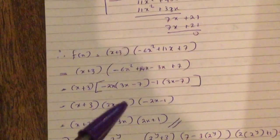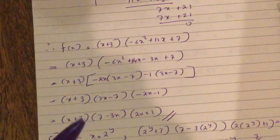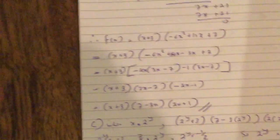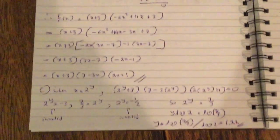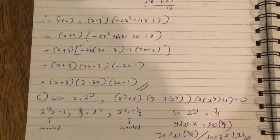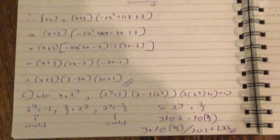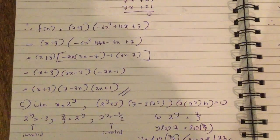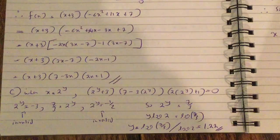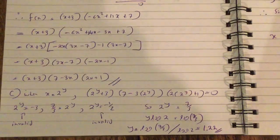You can take the minus out of the last bracket, making it (7 minus 3x)(2x plus 1). When x equals 2 to the power y: 2 to the y equals minus 3, 2 to the y equals 7 over 3, or 2 to the y equals minus half. Both negative values are invalid, so 2 to the y equals 7 over 3. Therefore y log 2 equals log(7 over 3), giving y equals 1.22.